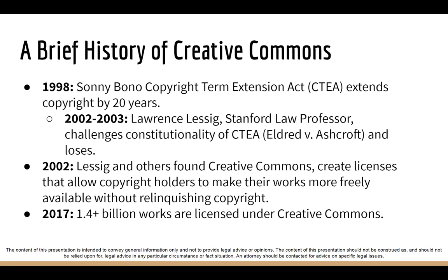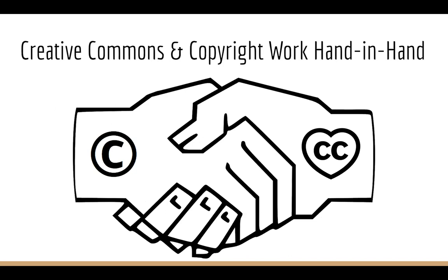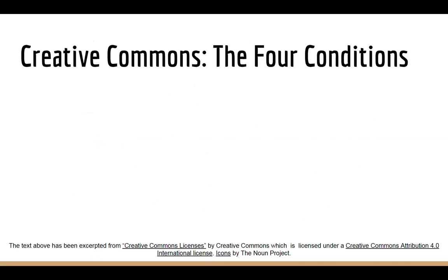Copyright is automatic whether you want it or not — it's conferred the minute you fix a work in tangible form. While some people want to reserve all their rights, many want to share their work more freely. Creative Commons licensing was designed as an easy way for creators to retain their copyright but share their works more openly. As of 2017, there are 1.4 billion works licensed under Creative Commons. It's a very common myth that when you openly license a work you have to waive your copyright — this is simply not true. Creative Commons is a mechanism for communicating to users that if their use meets the criteria specified by the license, they do not have to request permission from the copyright holder.